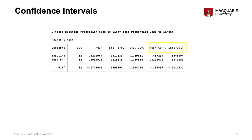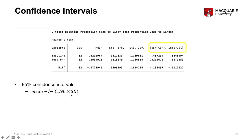If we wanted to actually calculate confidence intervals, you can do that pretty easily. Obviously software gives you that information, but it's still useful to know how to calculate it or where the numbers come from. It's basically calculated by the mean plus and minus 1.96 times the standard error — so the mean score of the variable, plus or minus 1.96 times the standard error of the variable.